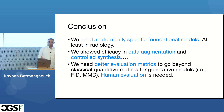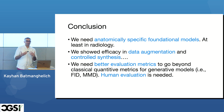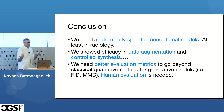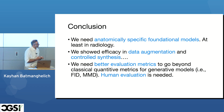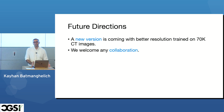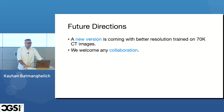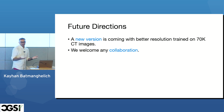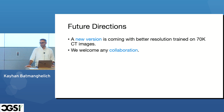In summary, I believe we need anatomically specific foundational models in radiology. There are so many details that are hard to preserve with a simple loss function, and there is still a lot of room for improvement. Better generators would enable data augmentation, controlled synthesis, reconstruction, reduced X-ray emission, and large synthetic datasets for innovation. We also need better evaluation metrics beyond classical ones, with human evaluation as a key component. We are working on extending this model to 70,000 CT images and are open to academic collaboration. Thank you.